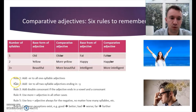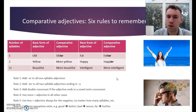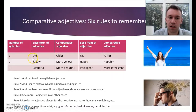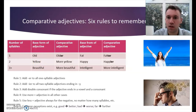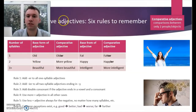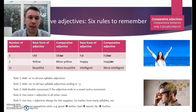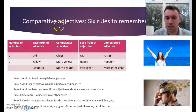There are six rules that we have to remember when dealing with comparative adjectives. But let's ask first: what is a comparative adjective? An adjective is a describing word like 'old' or 'yellow' or 'beautiful.' A comparative adjective is one that we use to make comparisons between two people or two objects — for example, this person is older than the other person.